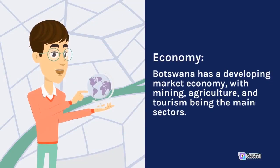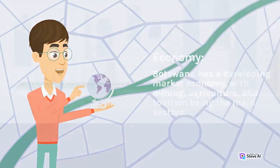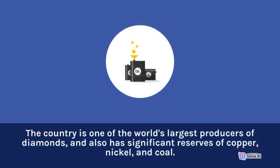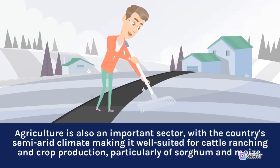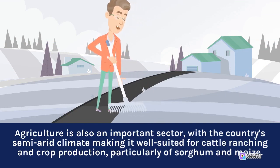Botswana has a developing market economy, with mining, agriculture, and tourism being the main sectors. The country is one of the world's largest producers of diamonds, and also has significant reserves of copper, nickel, and coal. Agriculture is also an important sector, with the country's semi-arid climate making it well-suited for cattle ranching and crop production, particularly of sorghum and maize.